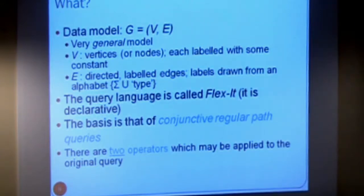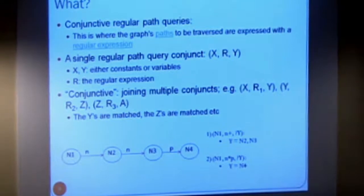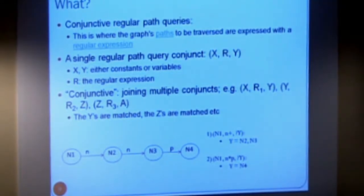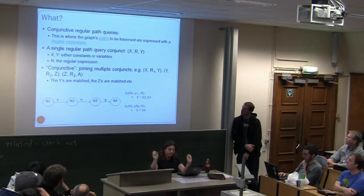Conjunctive regular path queries are where paths are expressed by regular expressions. Systems like SPARQL, Gremlin, Neo4j, and Cypher already use some form of this to express patterns to match. The semantics looks like: X, R, Y - where X and Y are either constants or variables, and R is the regular expression expressing the path between X and Y.